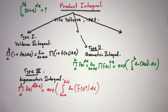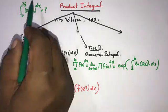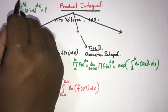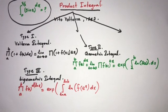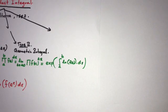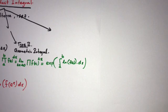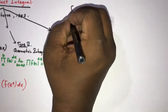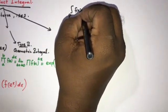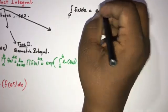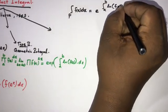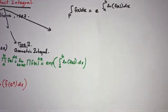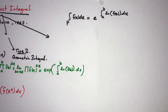Now our question is the integral from 0 to π/2 of sine of x raised to the dx. We know this is the second type of product integral — the geometric integral. We talked about this general case in a previous video and derived the formula: product integral of f(x) dx equals e to the integral from a to b of the natural log of f(x) dx.